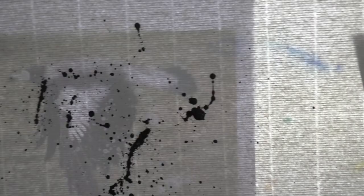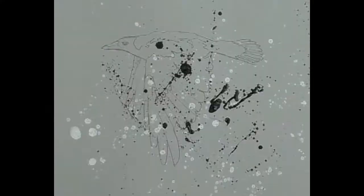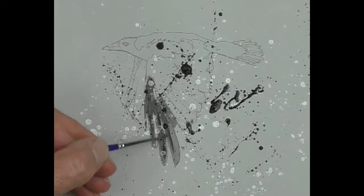Then you've got to find a picture of a magpie. This is an Australian magpie—looks a bit like an Aussie, doesn't it? Then you need to put it on the light table and move the grey paper around with the splatters on to find an interesting composition, and then draw it up.